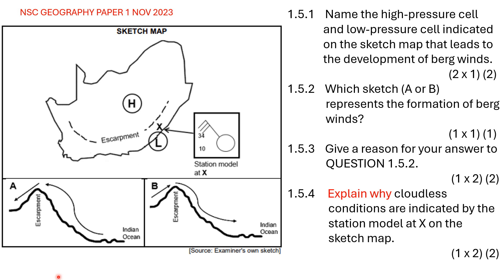Let's have a look at the Geography Paper 1 from the National Senior Certificate Examination of November 2023. Question 1.5 specifically deals with bergwinds in South Africa. Question 1.5.1 says to name the high pressure cell and the low pressure cell indicated on the sketch that leads to the development of bergwinds. The high pressure cell is the Kalahari High Pressure and the low pressure cell is called a coastal low.